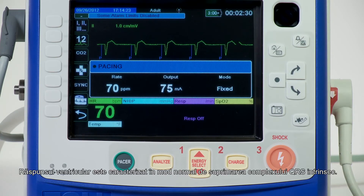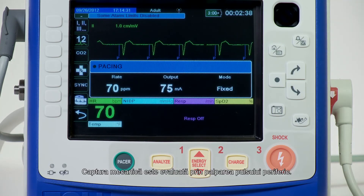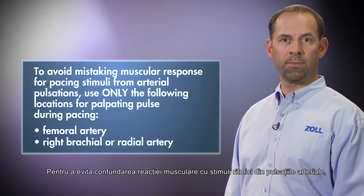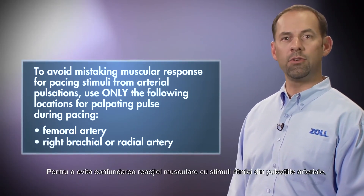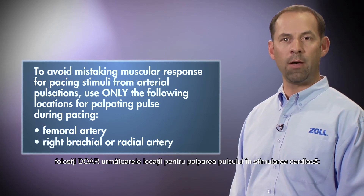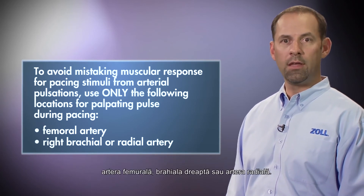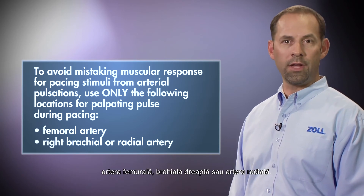Ventricular response is normally characterized by suppression of the intrinsic QRS complex. Mechanical capture is assessed by palpation of the peripheral pulse. To avoid mistaking muscular response for pacing stimuli from arterial pulsations, use only the following locations for palpating pulse during pacing: femoral artery, or right brachial or radial artery.